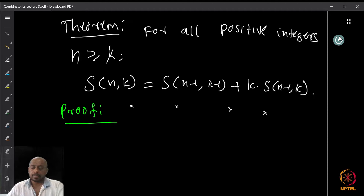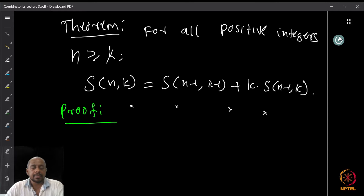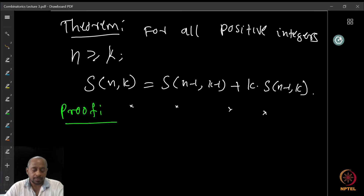Welcome back. In the previous lecture we were looking at recursions and we defined S(n,k), the Stirling number of the second kind, to be the number that counts the number of partitions of an n-element set into exactly k blocks. At the end of the lecture we asked you to try to prove the recursion formula that S(n,k) equals S(n-1, k-1) plus k times S(n-1, k). In any case, we are going to see a proof now.